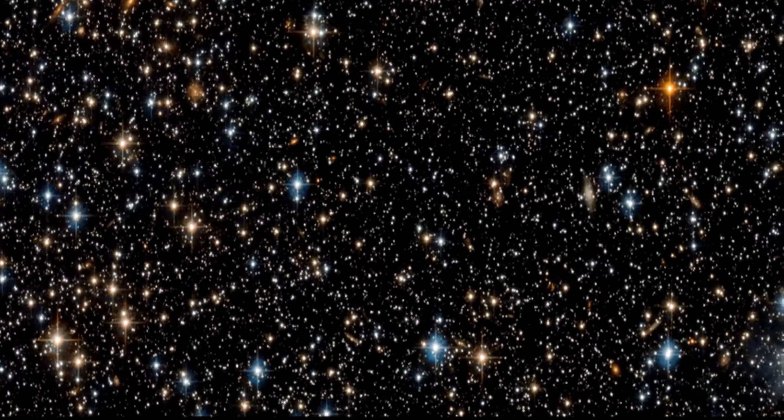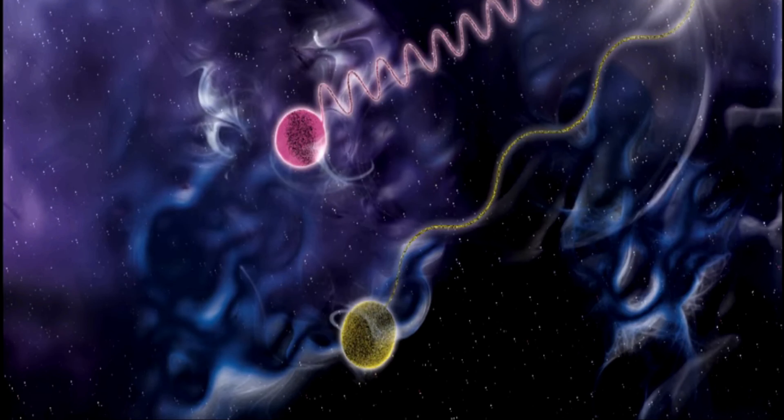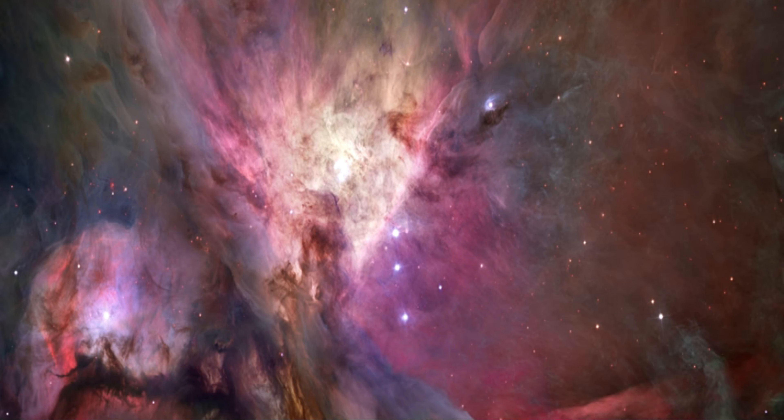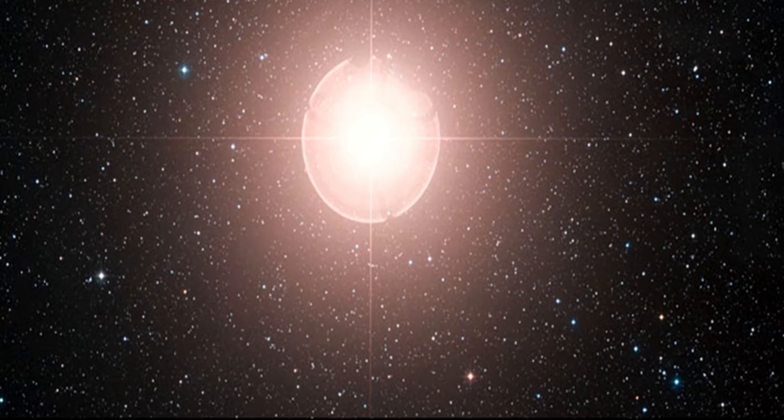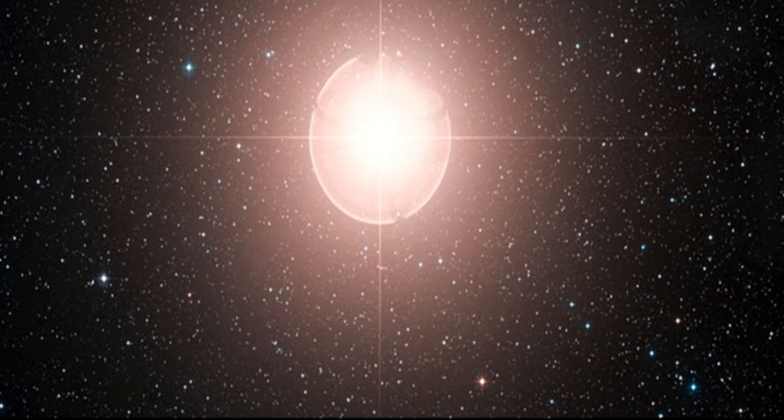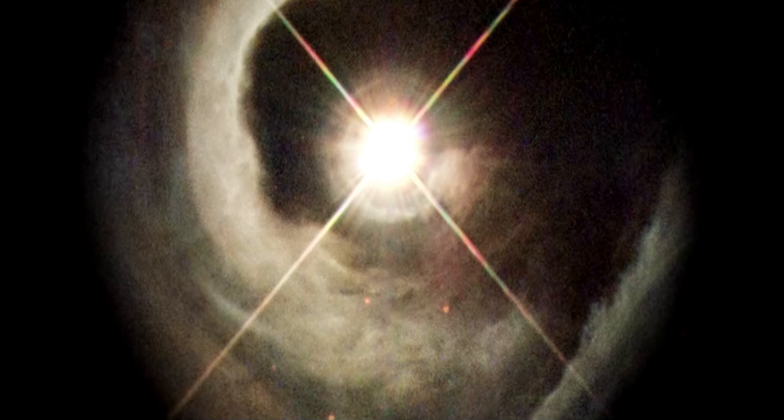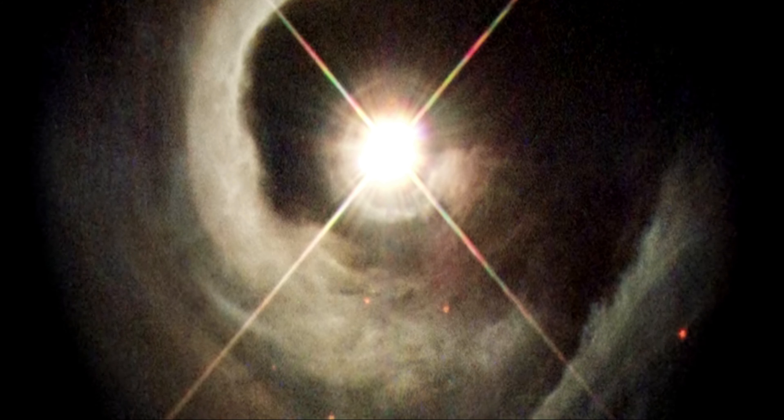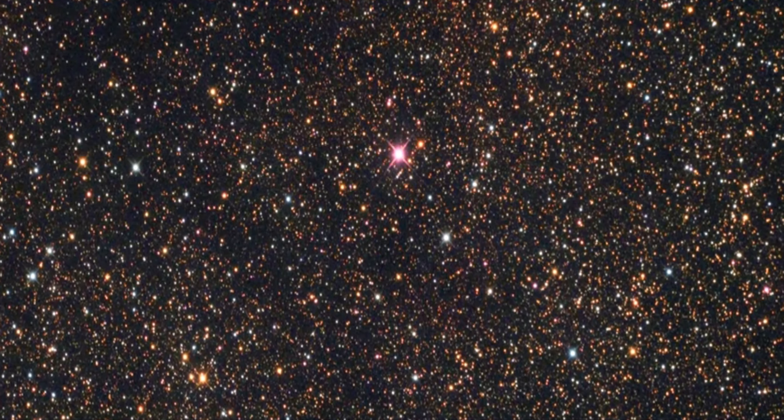The youthful PDS-70 system is filled with a primordial gas and dust disk that provides fuel to feed the growth of planets throughout the entire system. The planet PDS-70b is encircled by its own gas and dust disk that siphons material from the vastly larger circumstellar disk. The researchers hypothesize that magnetic field lines extend from its circumplanetary disk down to the exoplanet's atmosphere and are funneling material onto the planet's surface.